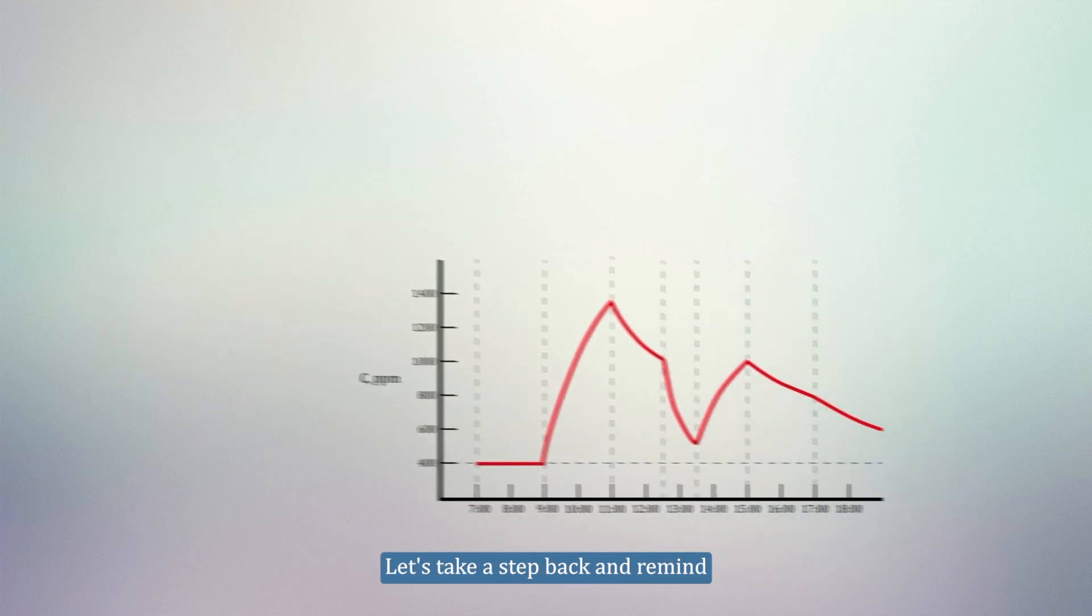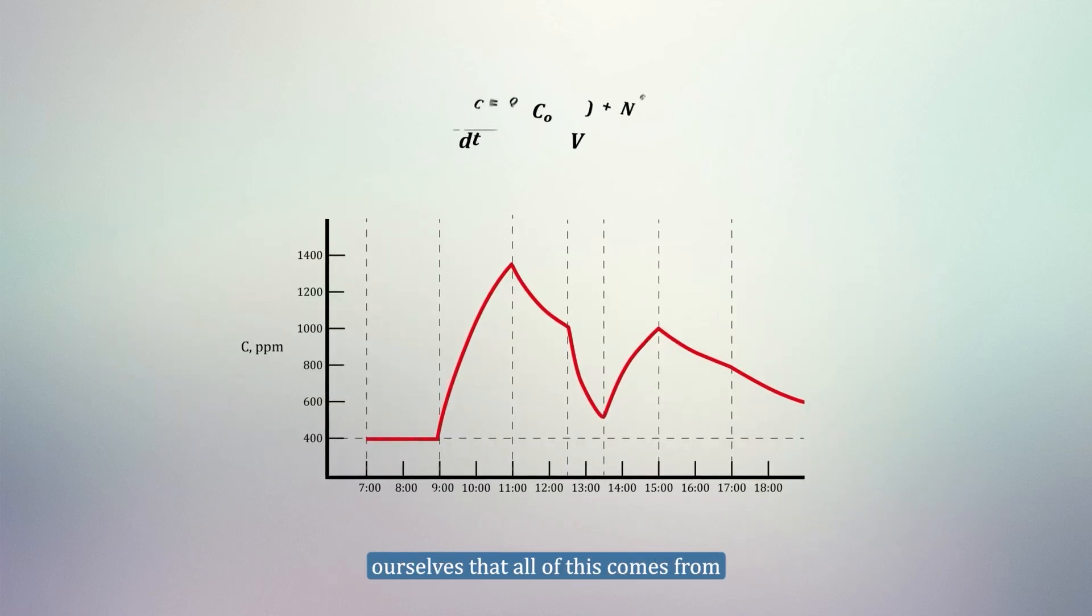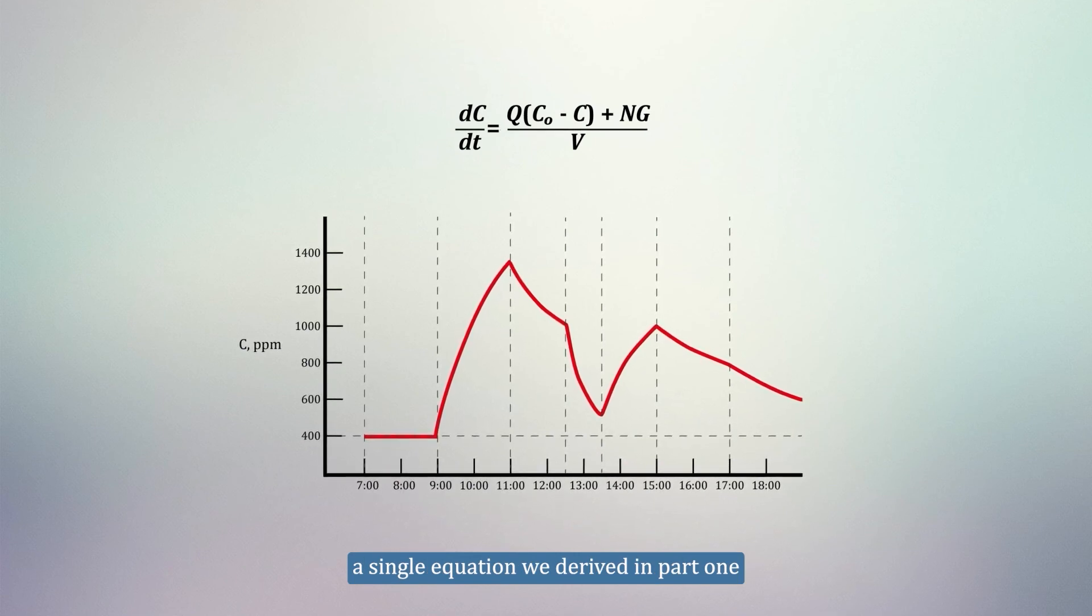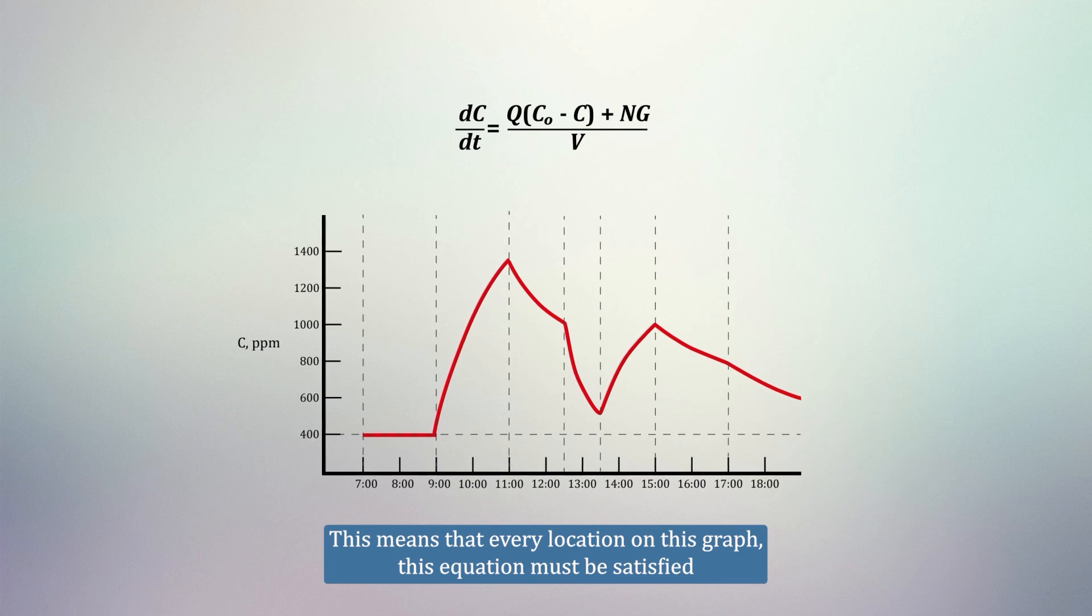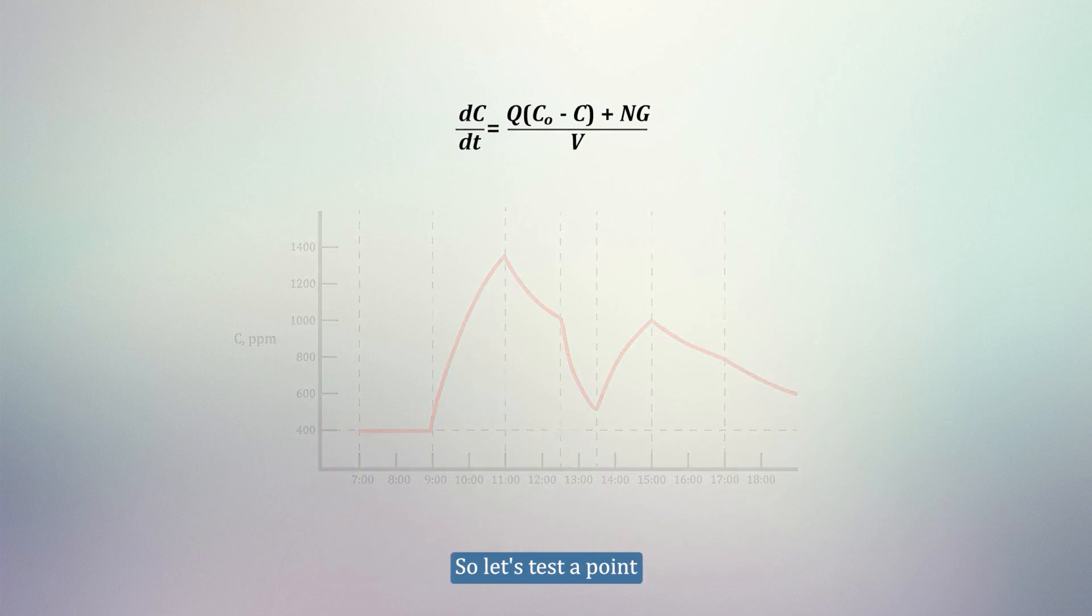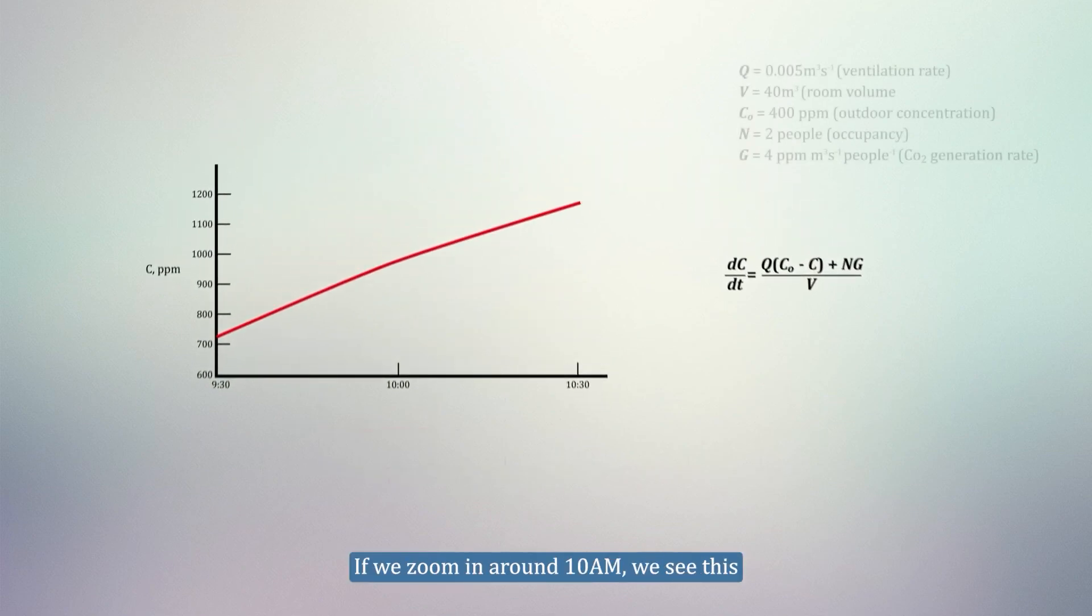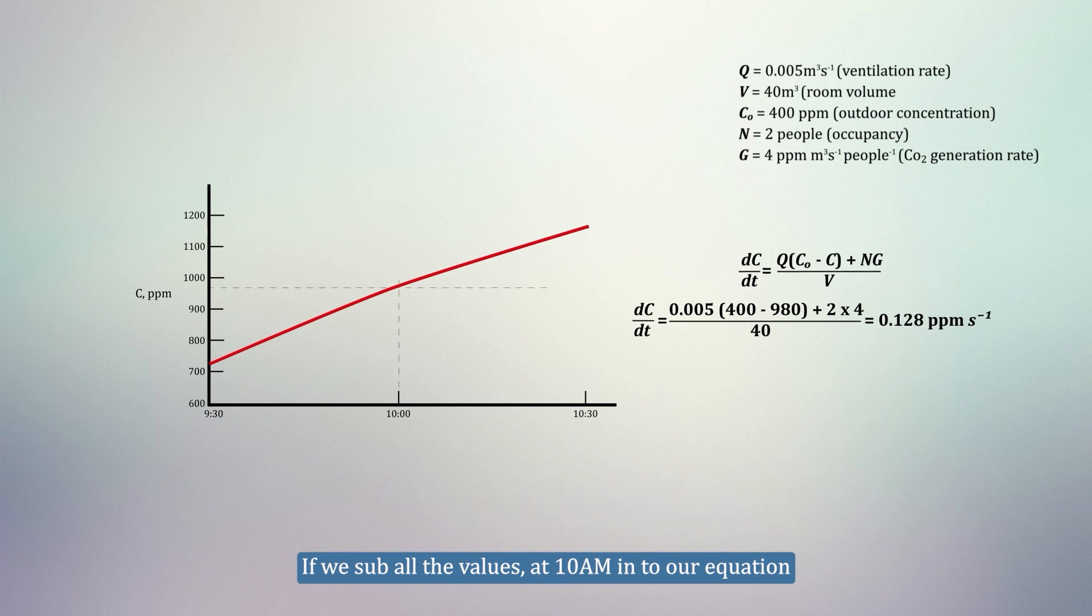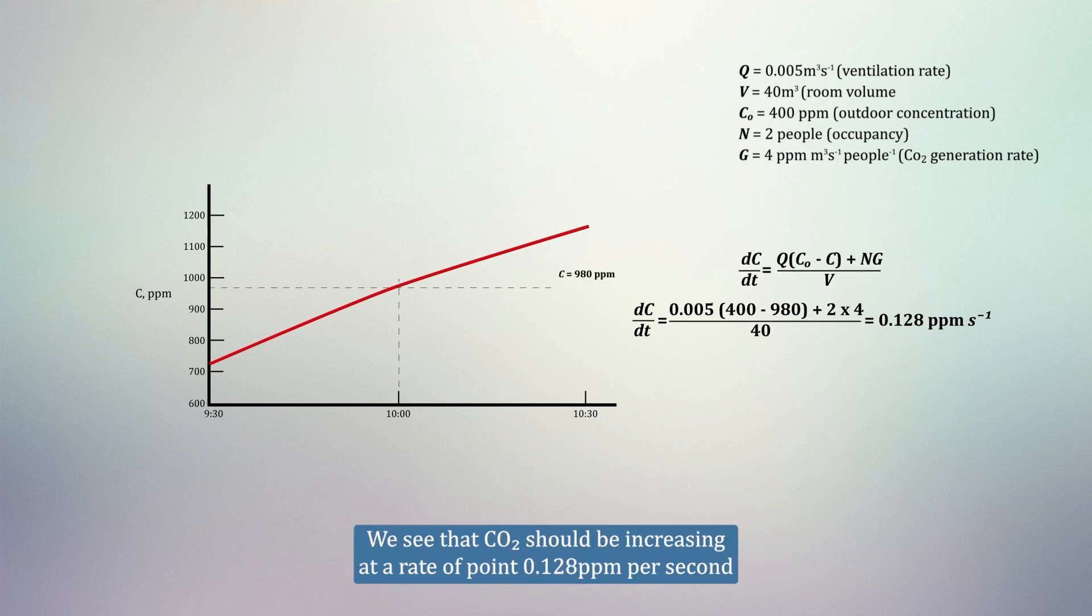Let's take a step back and remind ourselves that all of this comes from a single equation we derived in part 1. This means that at every location on this graph, this equation must be satisfied. So let's test the point. If we zoom in around 10am, we see this. If we sub all the values at 10am into our equation, we see that CO2 should be increasing at a rate of 0.128 ppm per second.